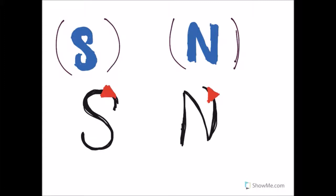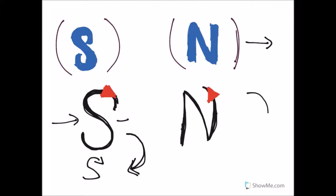If you have a south polarity in the coil, the current will flow in the clockwise direction. An easy way to remember: draw an S and draw an arrow — south polarity means clockwise current. If there is north polarity, the current flows in the anti-clockwise direction.